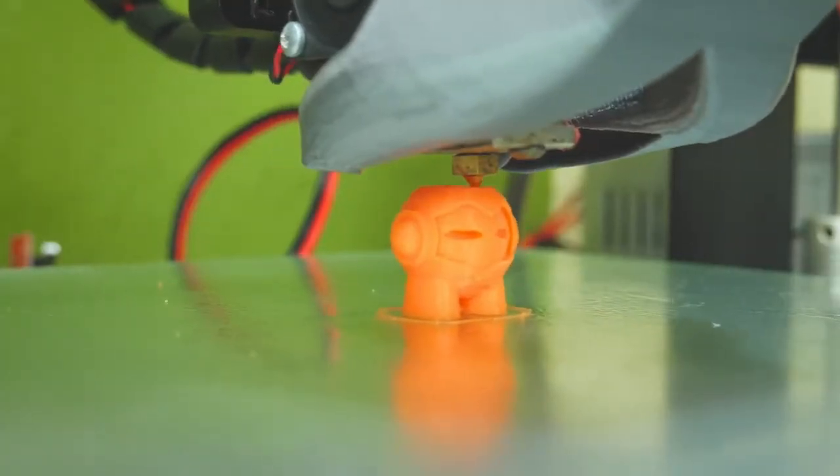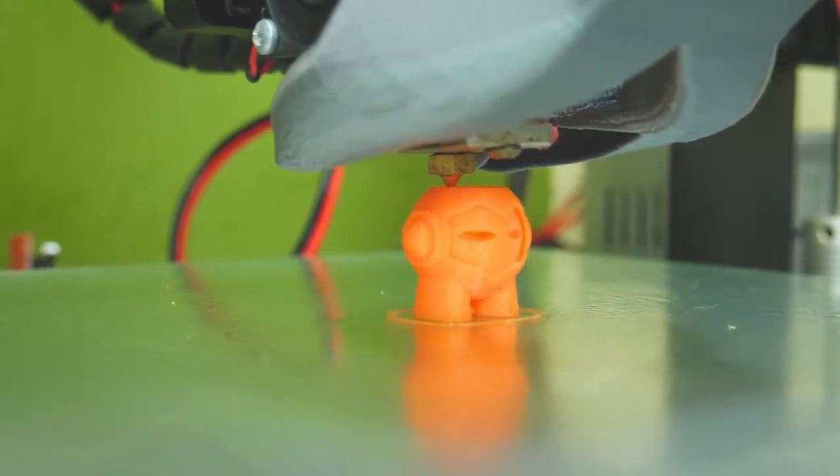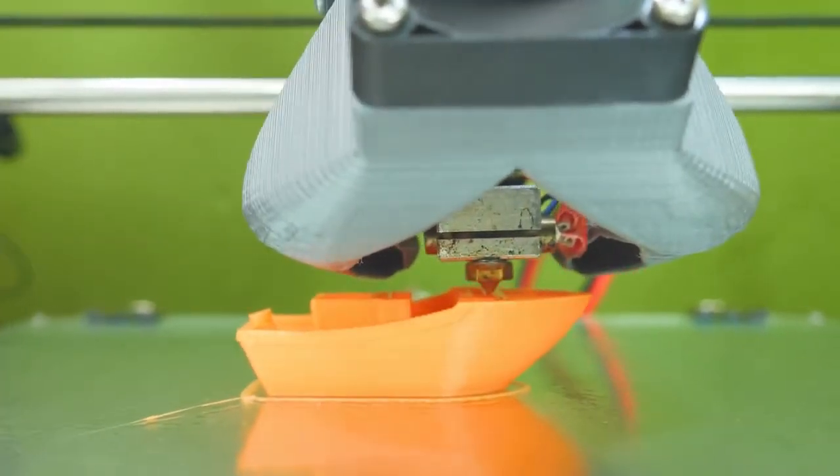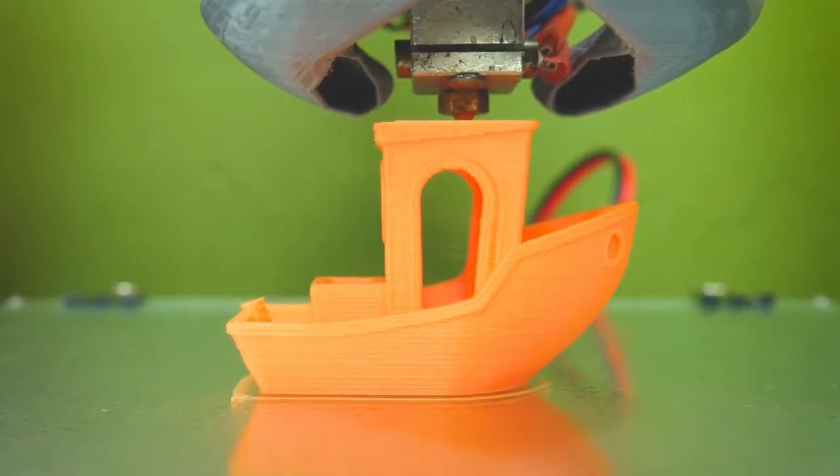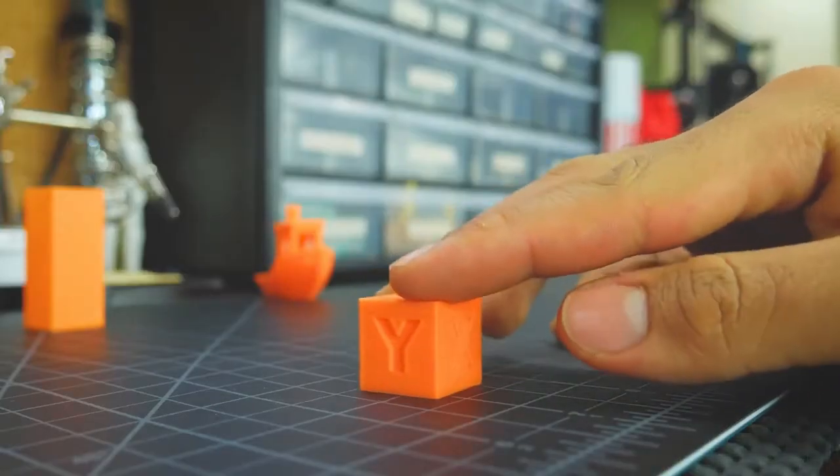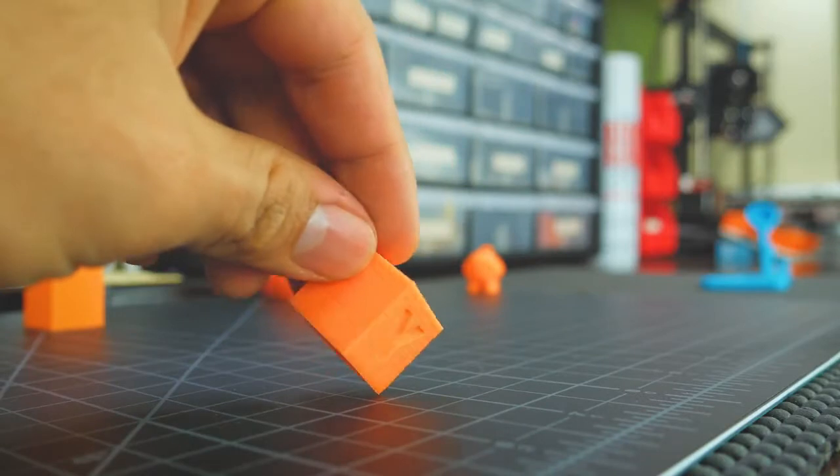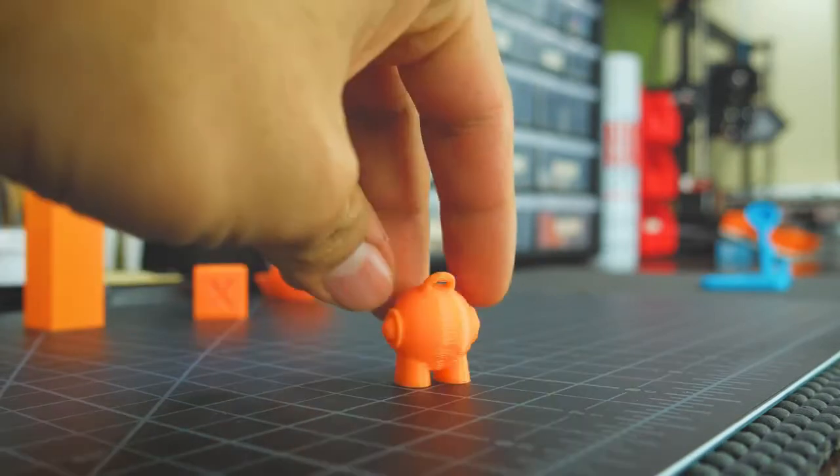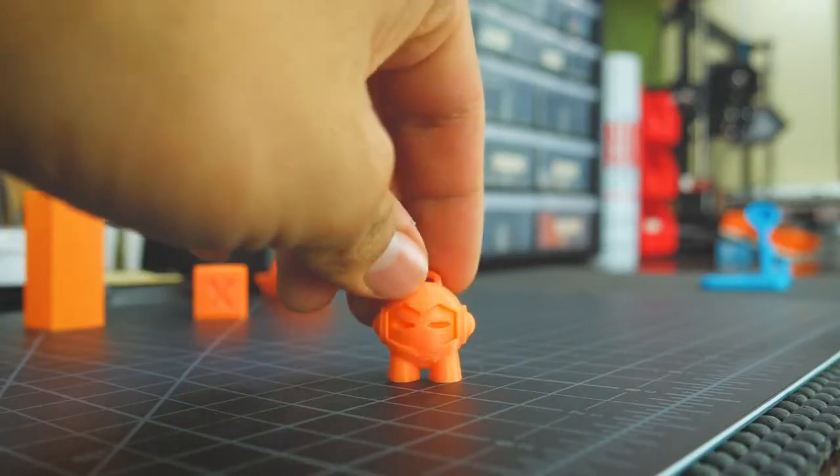As usual, I printed a calibration cube, a 3D Benchy, and a Marvin, along with other designs I considered would be benefited by this filament. The calibration cube turned out perfectly, with very well defined corners and letters. The same goes to the Marvin and the 3D Benchy.